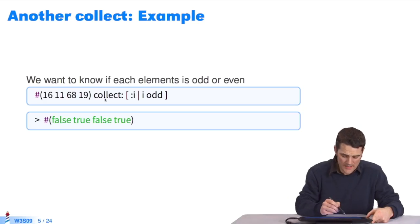This is another example of collect. This is a collection to which I send the message collect. In the block, I'll ask every time whether the element is odd. I'll aggregate all the results: false, true, false, true.